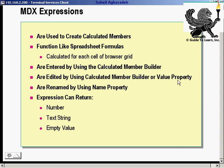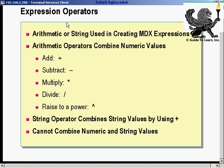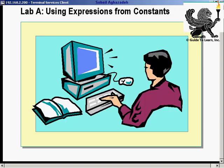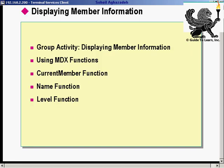These were the operators I demonstrated — addition and others. The string operator combines string values using plus, for example. You cannot combine numeric and string values together, but you can concatenate two different string values — like 'hello' plus 'world.' There is a lab that allows you to practice creating expressions from constants, which I'll give you later. Meanwhile, let's move on.